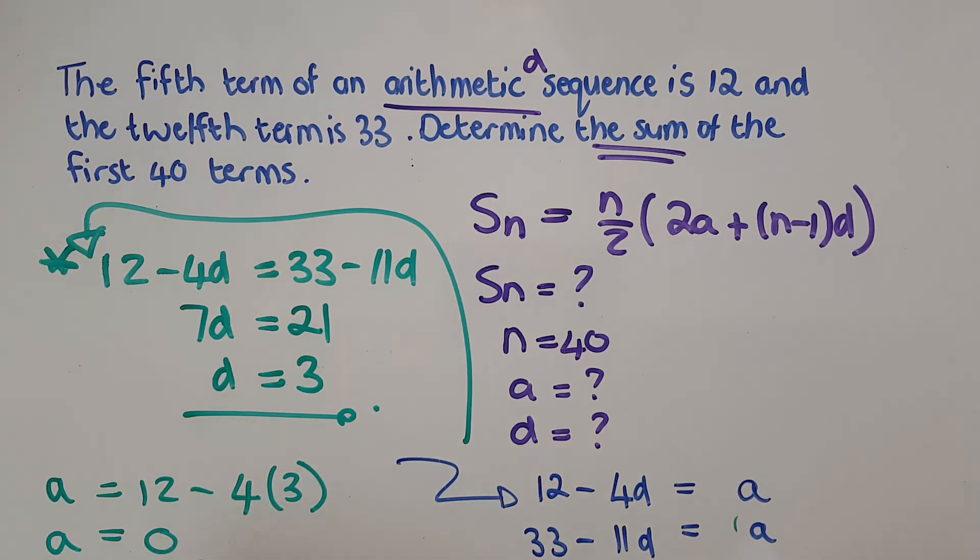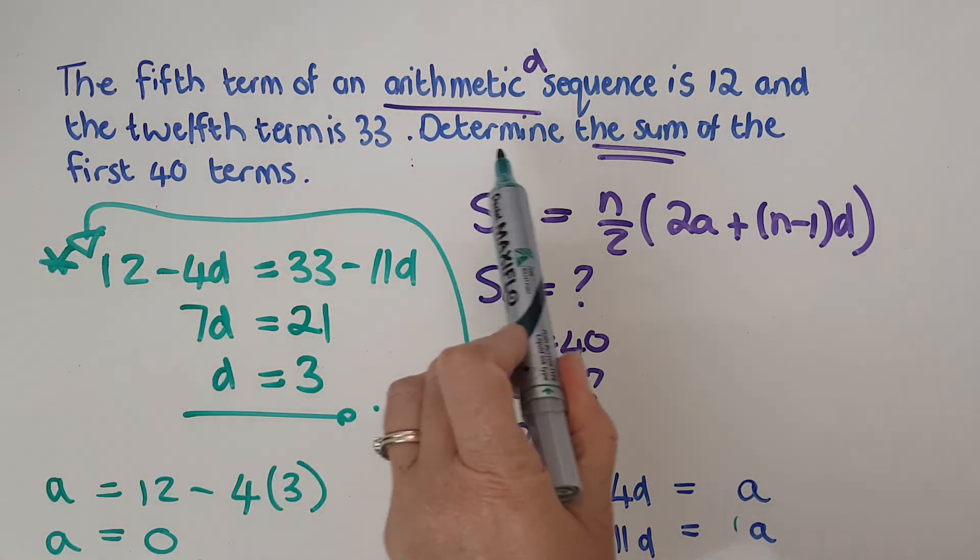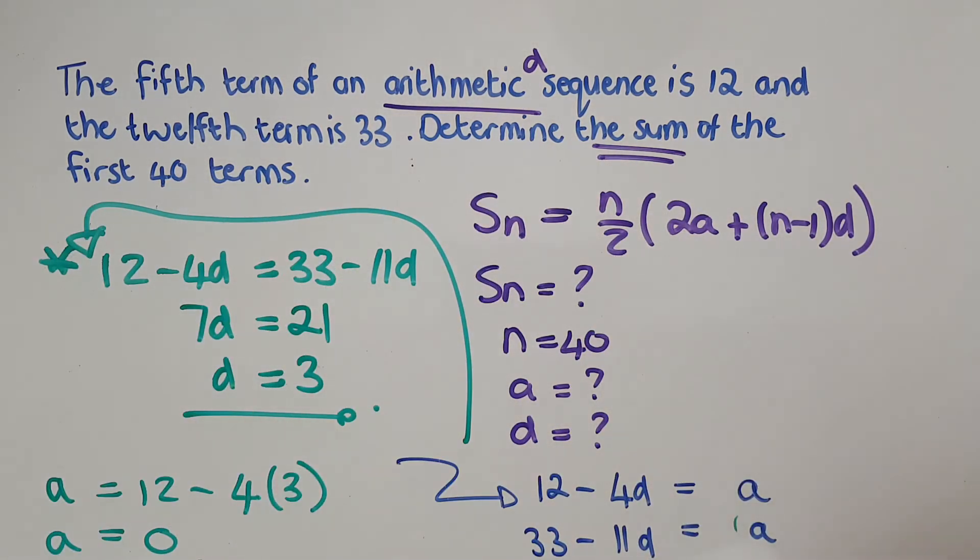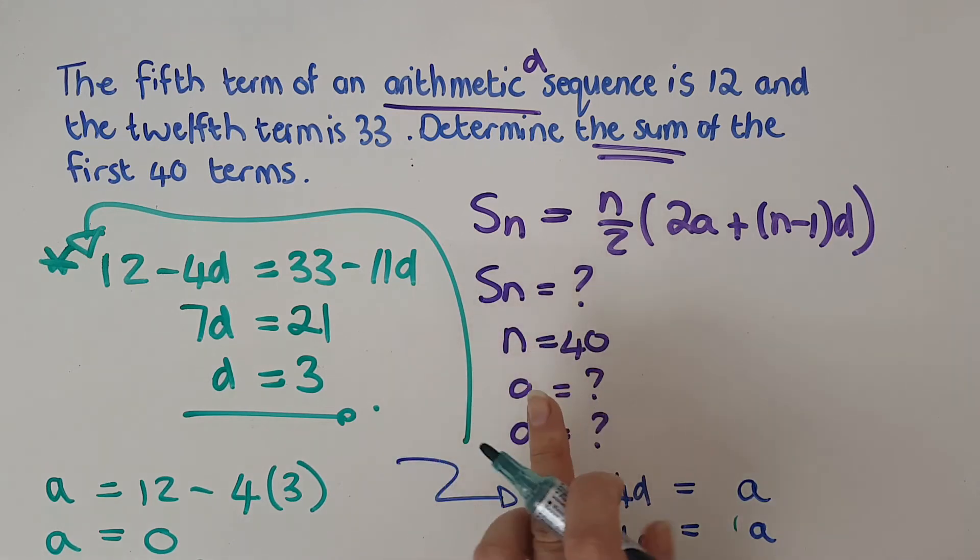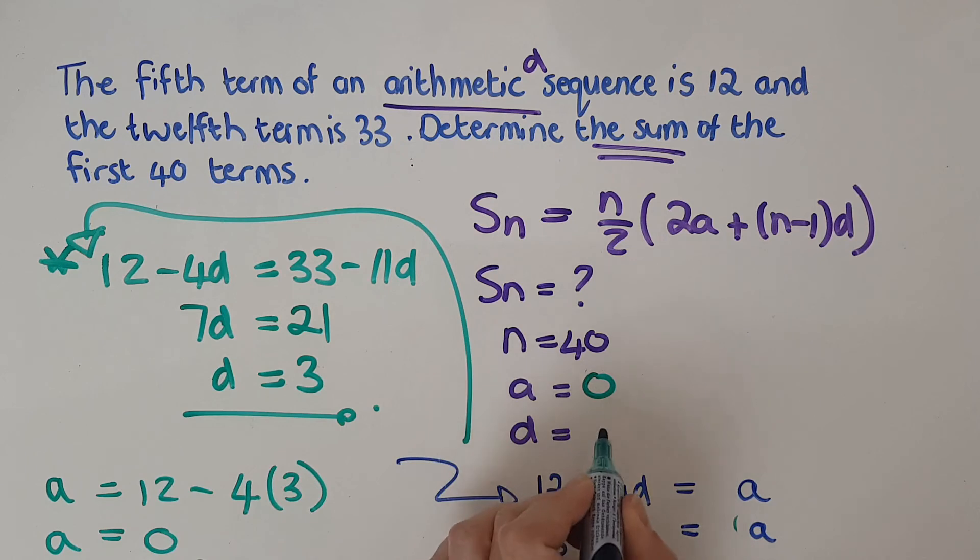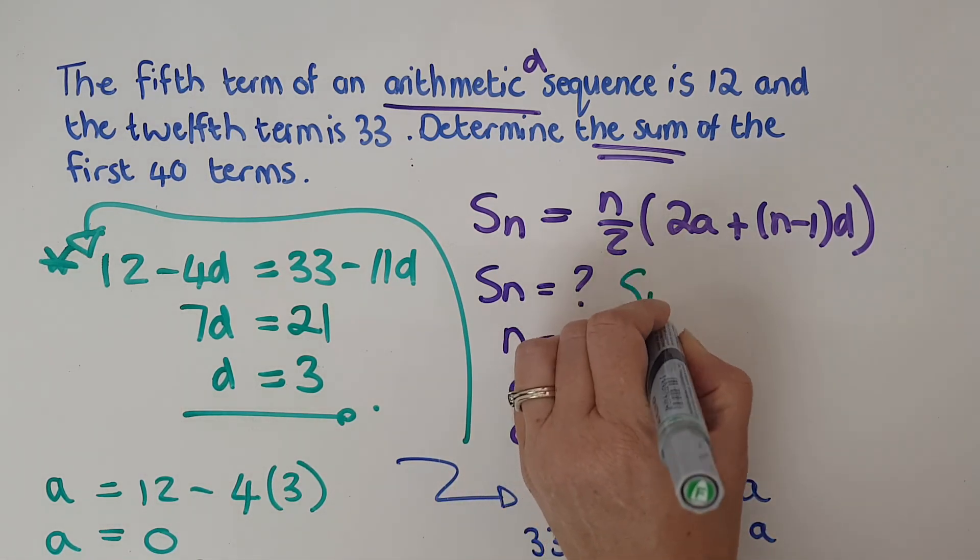So I've got d, I've got a. My first term is 0, that's perfectly legit. The question was determine the sum of the first 40 terms. I've got d, I've got a, and now I can sub in. The a is 0 and the d is 3.